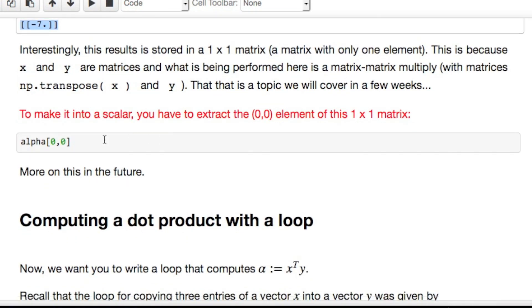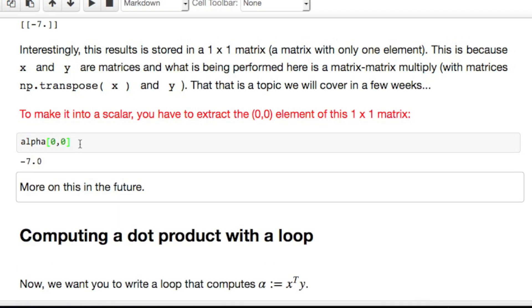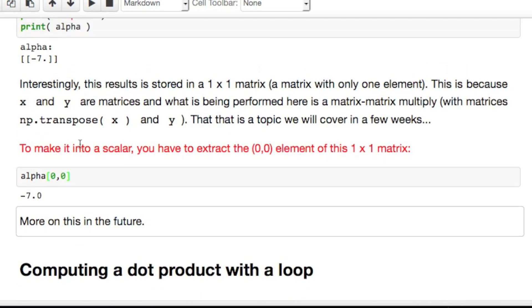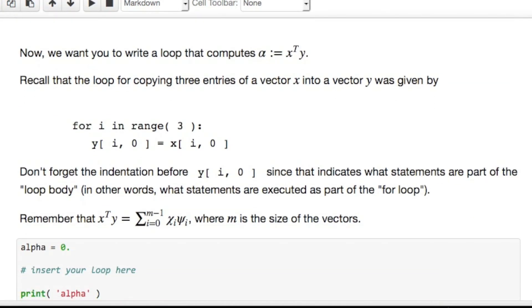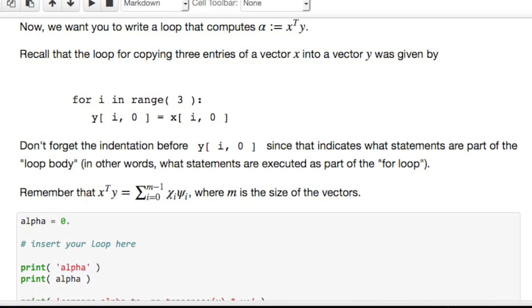If you then actually want to get this result as a scalar, then what you have to do is reference the 0,0 element of that matrix, and you get minus 7. Notice the difference between the minus 7 here as an element in a one-by-one matrix, and the result here, which is just a scalar value minus 7. Okay. Other than that, things are going to be pretty straightforward.